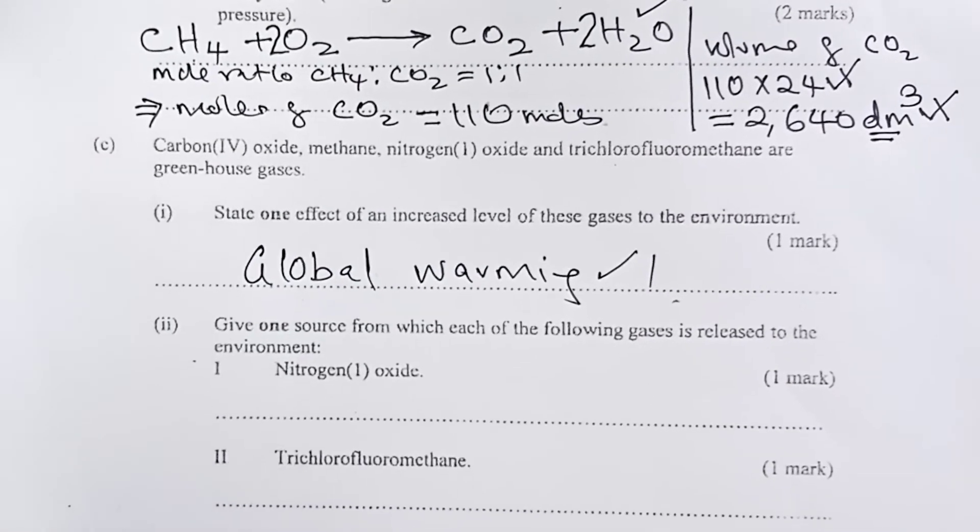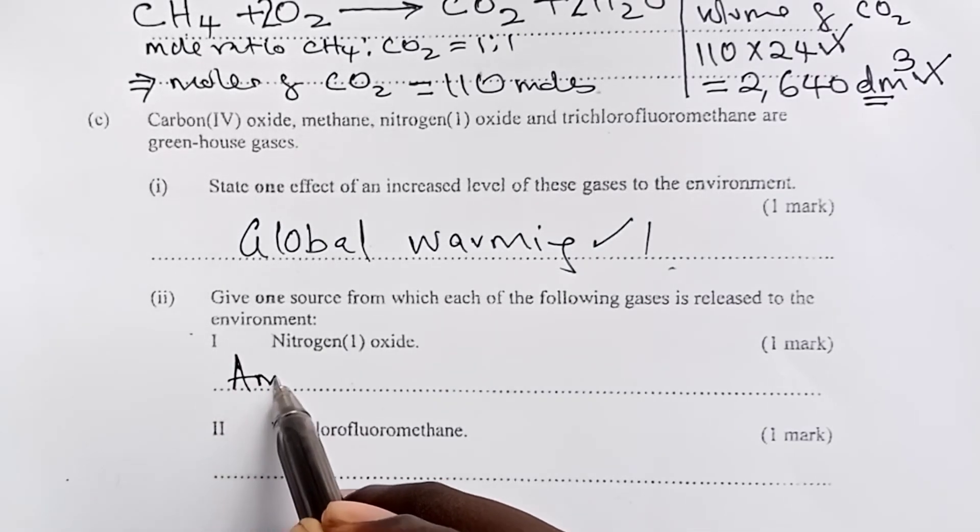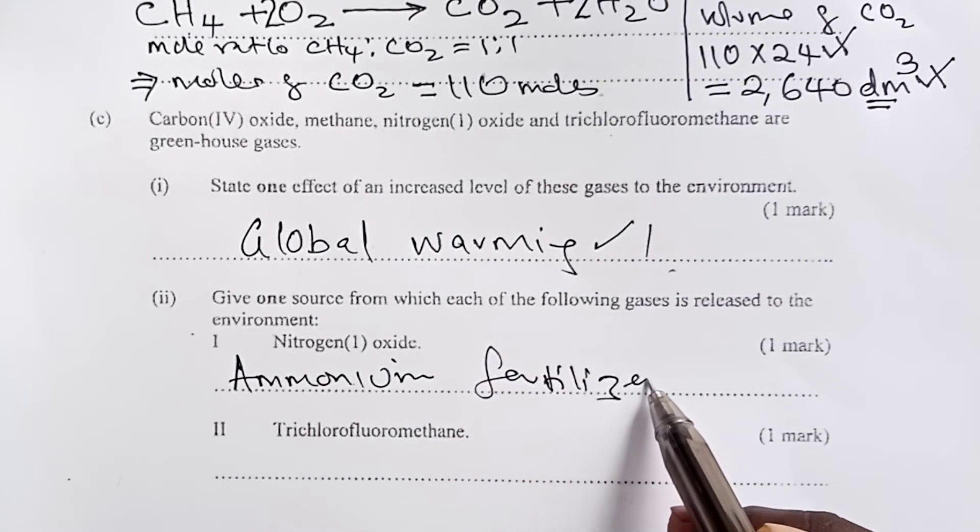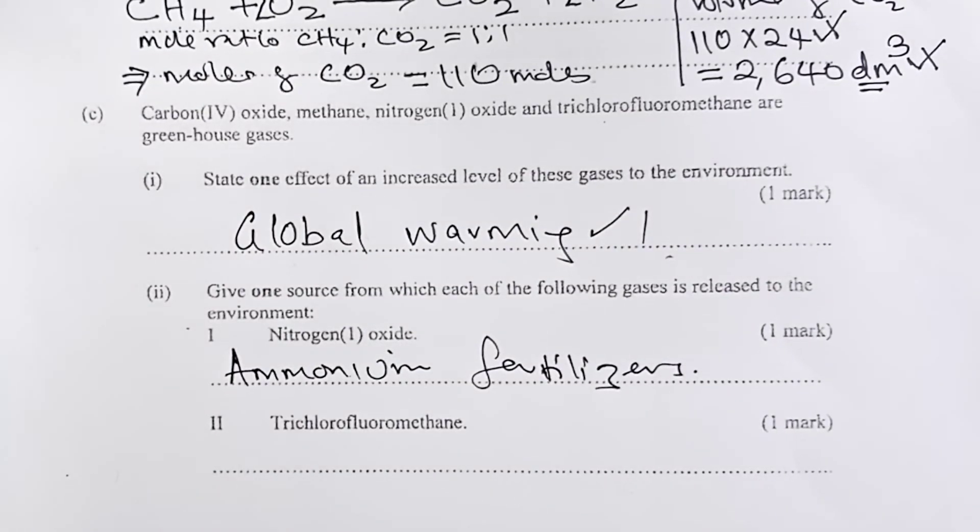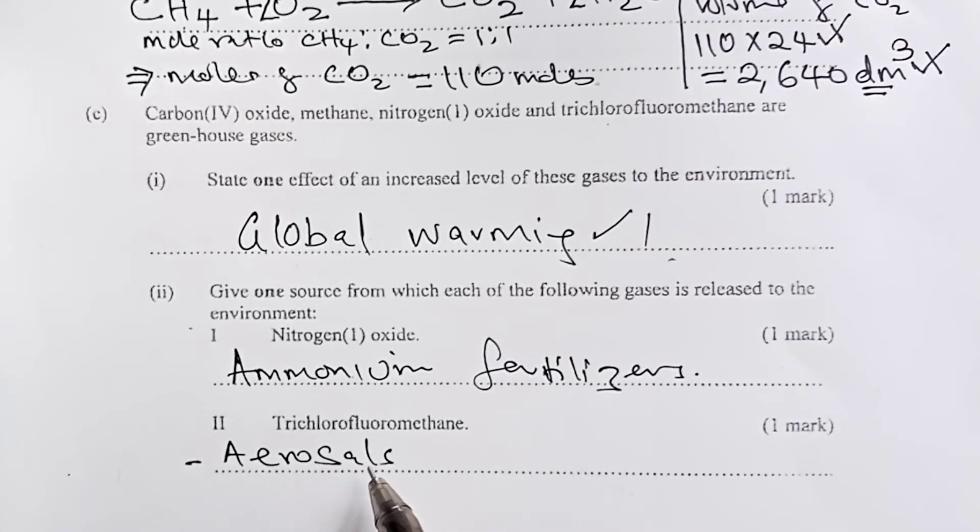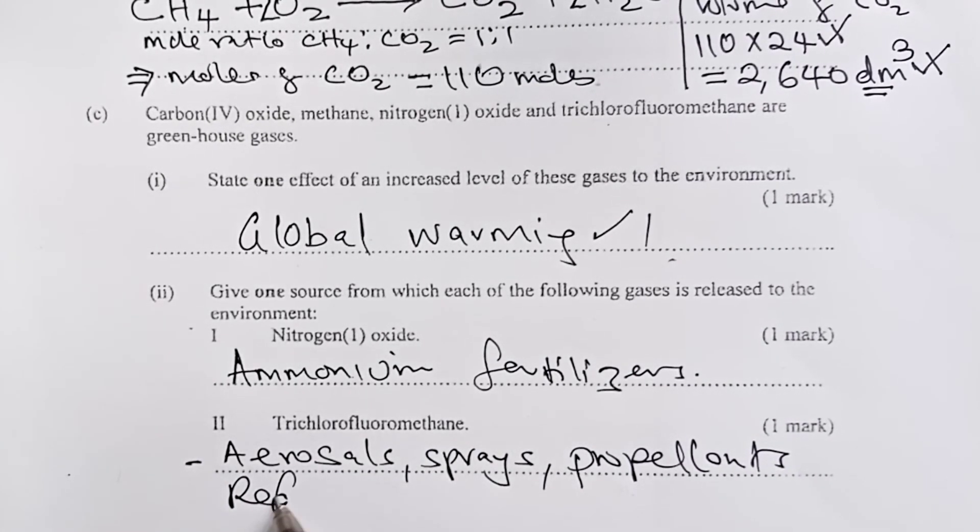Last question. As far as our question on 2008 KCSE paper 2, question number 1 is concerned is, give one source from which each of the following gases is released to the environment. Nitrogen-1 oxide mainly comes from ammonium fertilizers. So you can give any, like ammonium nitrate, and so on. For trichlorofluoromethane, the sources are so many. We have aerosols, sprays, propellants, and even we get them from refrigerators.